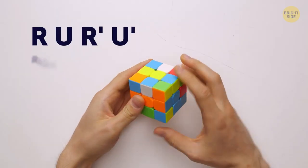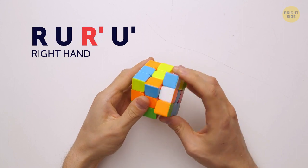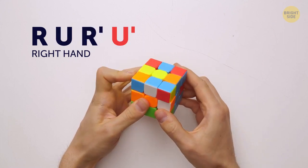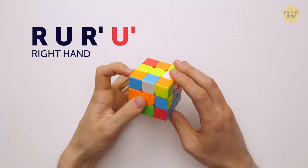Let's see what that looks like in real life. Right hand: R, U, R apostrophe, U apostrophe. And once again, R, U, R apostrophe, U apostrophe.